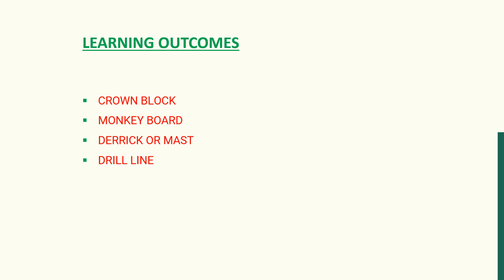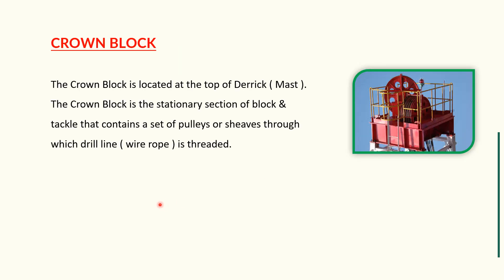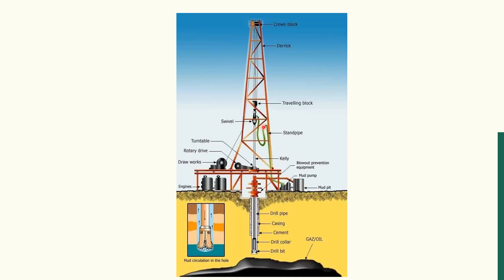The first equipment is the crown block. This is an image of a crown block. The vertical structure you see is called the derrick or mast. The crown block is located at the very top of the derrick. Always remember: the crown block is located at the top of the derrick in every rig.